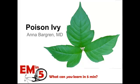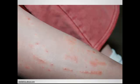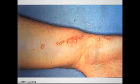We're starting off the summer for EM in 5 talking about poison ivy. Say you have a patient that comes in with a rash on their leg — it's pretty itchy and vesicular — and they say they thought about poison ivy, but they haven't been camping recently, haven't been taking any walks outside. Now the patient's worried it's spreading: it started on the leg, and now they're starting to see it on the arm. What do you think about that?